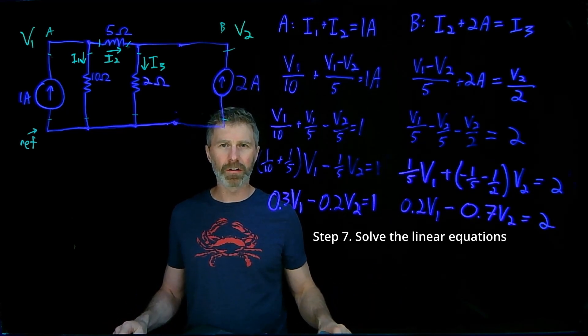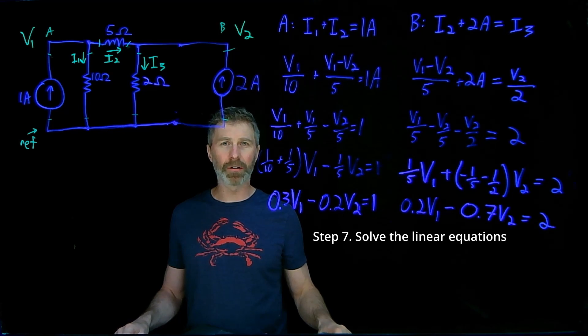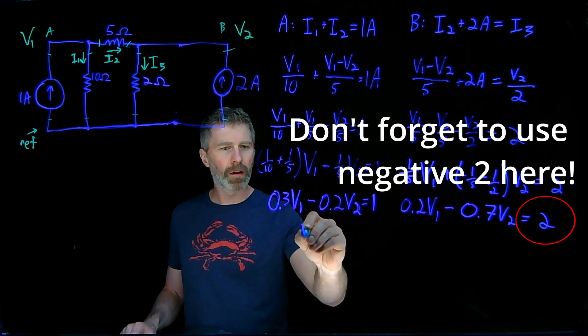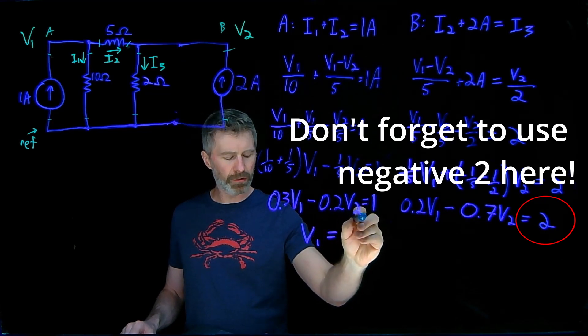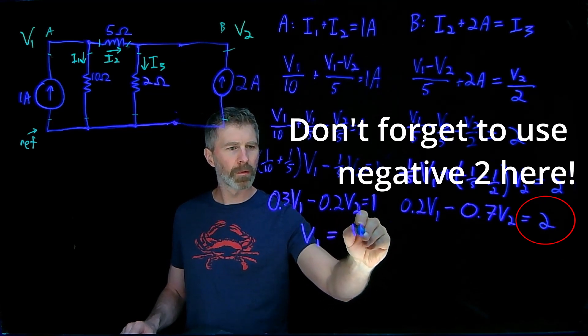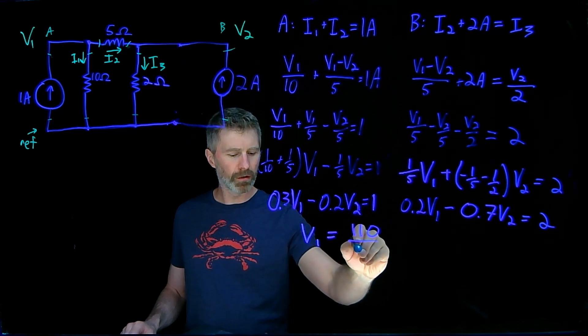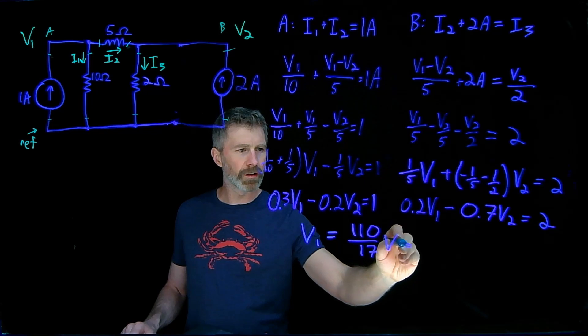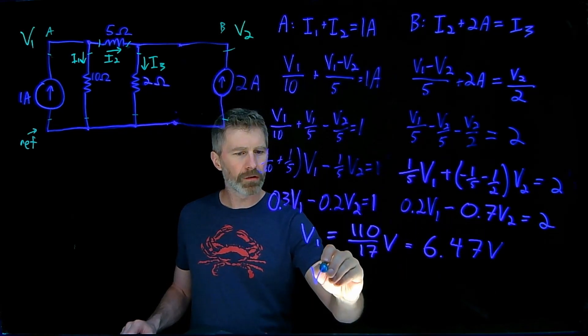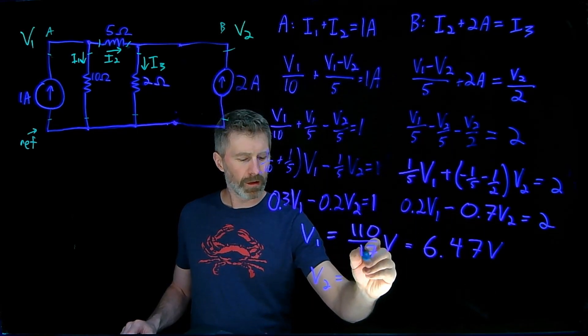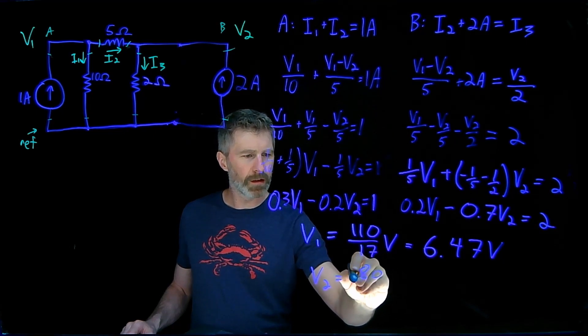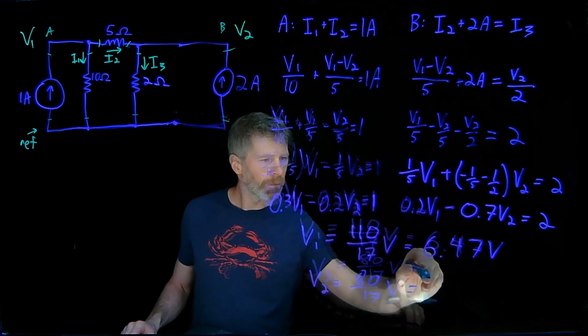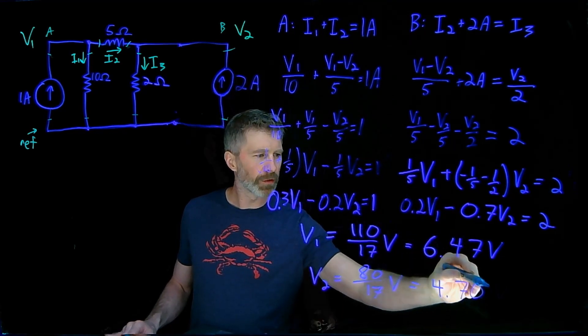I'm not going to go through all those options now. In another video, you can see a number of different options I've gone through to solve this. What I end up with is V1 equals 110 over 17 volts, which is 6.47 volts, and V2 is 80 over 17 volts, which is 4.70 volts.